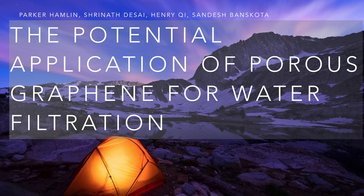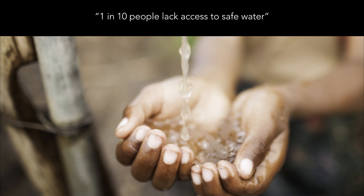We will give you an overview of why we need a better filtration system and how a graphene-based filtration membrane might be the solution. Currently, 1 in 10 people lack access to safe water — that's 783 million to 1 billion people that don't get access to safe water each and every day. 6 to 8 million people die annually from the consequences of water-related diseases and disasters. So obviously, current water filtration systems need to change.